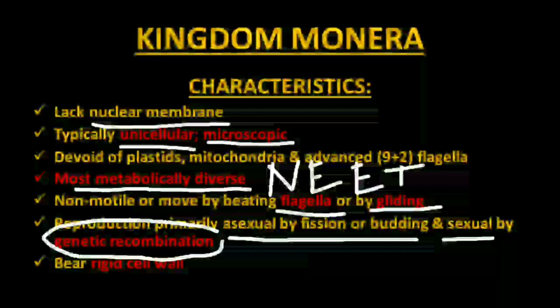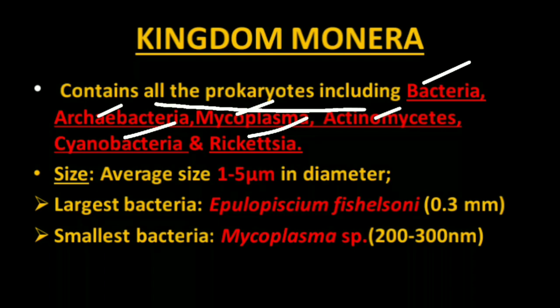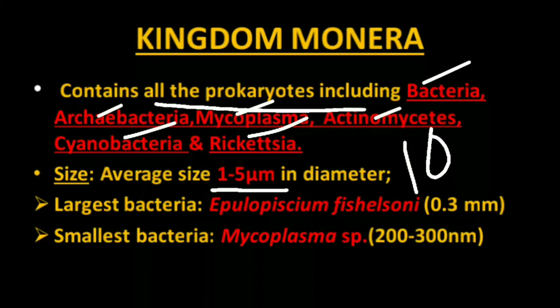Kingdom Monera contains all prokaryotes including bacteria, archibacteria, mycoplasma, actinomycetes, cyanobacteria, and rickettsia. I have two questions for viewers: what is the alternative name of cyanobacteria, and can you name a disease caused by rickettsia? Please write in the comment section. The average size of bacteria is 1 to 5 micrometers — 10 to the power minus 6 meters — so you can easily assume how small they are.